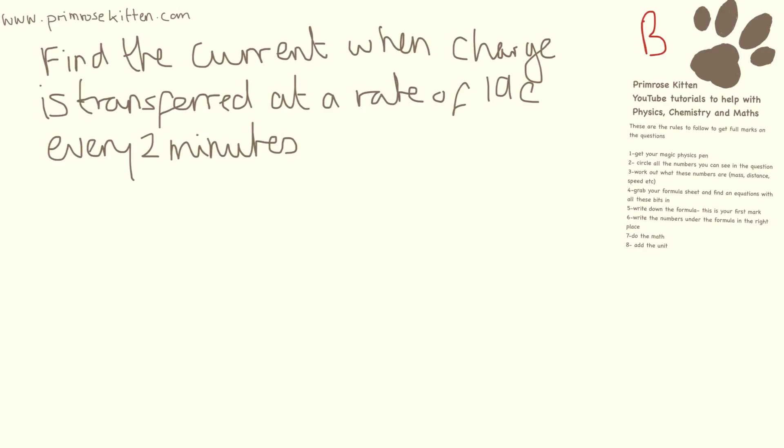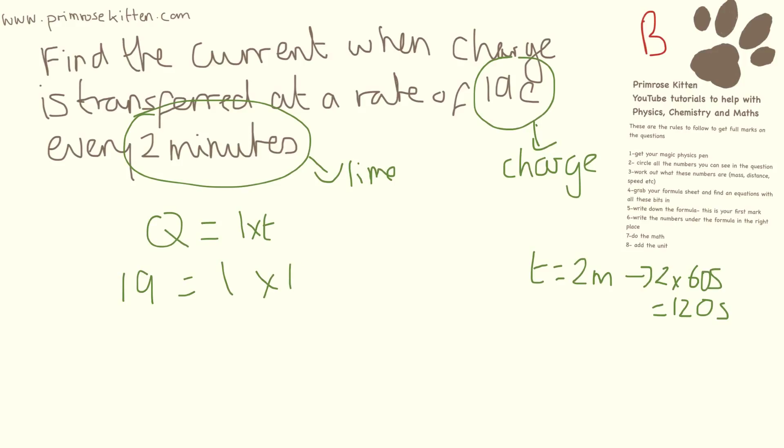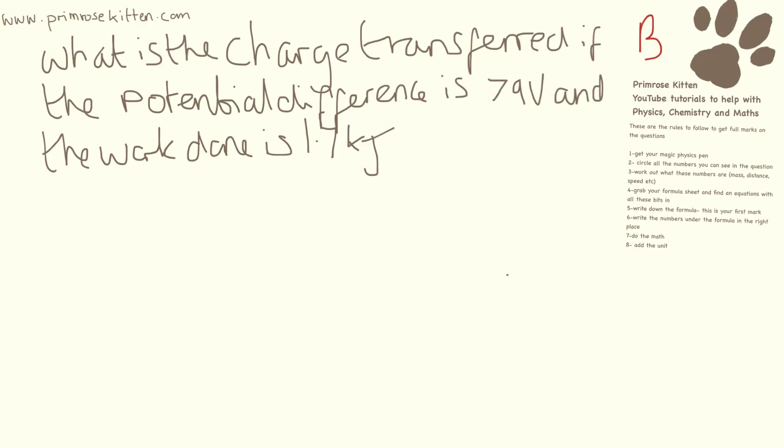So find the current when the charge is transferred at 19 coulombs every 2 minutes. Now our standard unit for time is seconds so we need to convert that into seconds. So that is 2 times 60 which equals 120 seconds. So we have Q equals I times T, this is our time, this is our charge. So we have 19 equals I times 120, we need to take 120 over to the other side so we have 19 divided by 120 which gives us 0.16 amps.